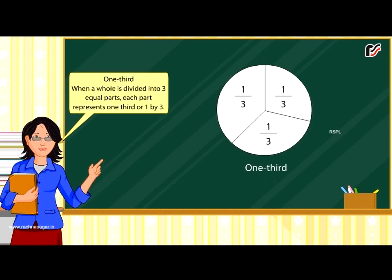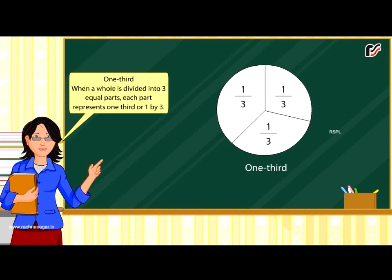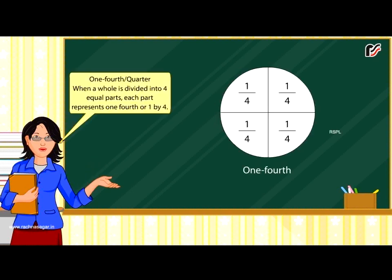When a whole is divided into three equal parts, each part represents one third or one by three. When a whole is divided into four equal parts, each part represents one fourth or one by four.